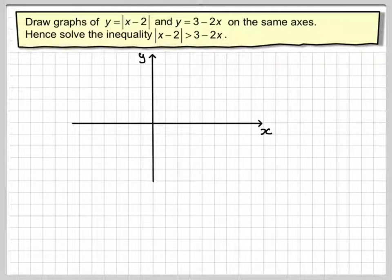So if we draw a set of axes, draw this one first. The critical value is 2, so we'll put it here because that's what makes that equal to 0.